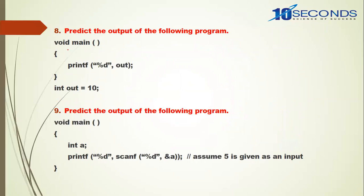Predict the output of the following program: void main printf %d out — this throws an error because the compiler encounters 'out' but does not know it is defined outside the main program. To eliminate this error, add the statement 'extern int out'. The extern keyword tells the compiler that memory for 'out' is defined somewhere outside the program. Without this extern statement you get an error.